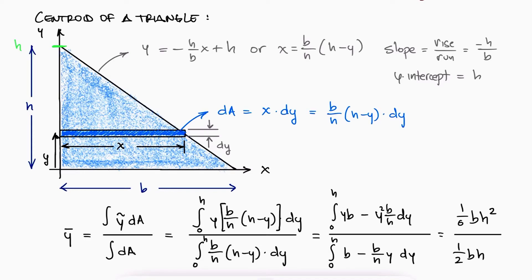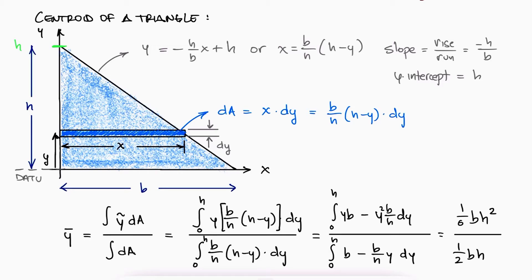This means that the centroid from the bottom, our point of reference, is h over 3. This is what we used in the examples of the shear and bending moment diagrams video, links below.